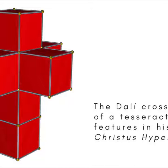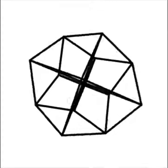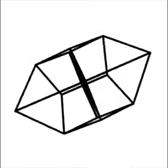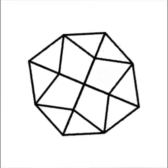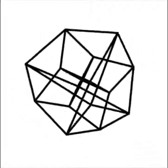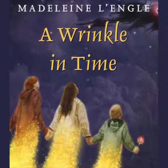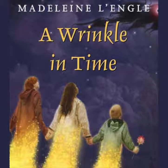Tesseracts turn up in both art and literature. Salvador Dalí's Christus Hypercubus shows Christ being crucified on a tesseract. In Robert Heinlein's short story And He Built a Crooked House from 1940, a house built as a three-dimensional projection of a tesseract collapses or folds up to become a real tesseract, with unusual consequences for the person trapped inside. The tesseract is also mentioned in Madeleine L'Engle's children's fantasy A Wrinkle in Time as a way of introducing the concept of higher dimensions.